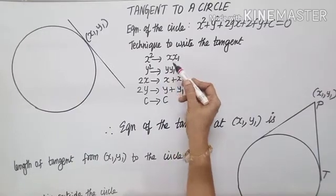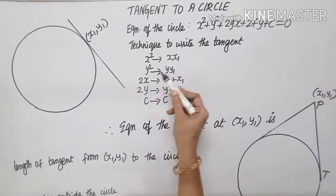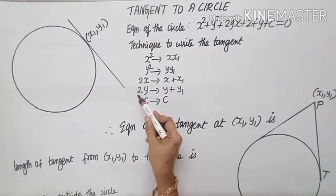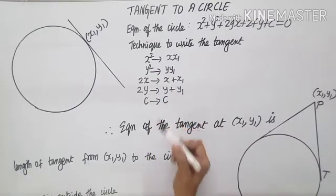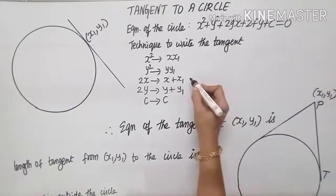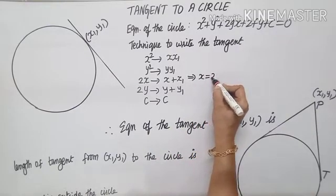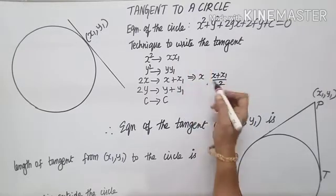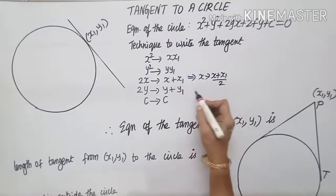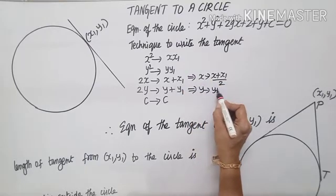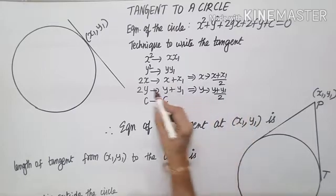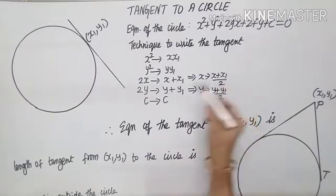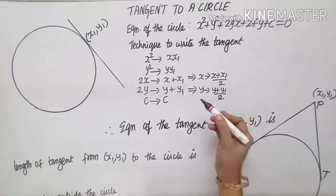x square becomes x·x1, y square becomes y·y1, 2x becomes x plus x1, 2y becomes y plus y1, constant as it is. This can also be rewritten: x becomes (x plus x1) by 2. Similarly, y becomes (y plus y1) by 2. If it is 2x, simply write x plus x1; or if it is x alone, write (x plus x1) by 2.